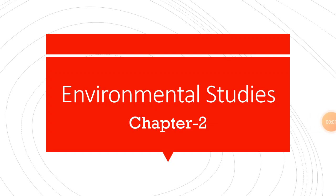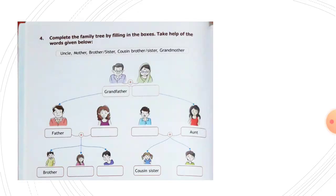Good morning children, this is our EBS class. Today we are going to complete the second chapter. This is page number 24. Complete the family tree by filling in the boxes. Take help of the given words.